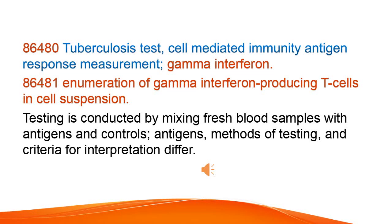Tuberculosis test, cell-mediated immunity antigen response measurement, gamma interferon. Enumeration of gamma interferon producing T-cells in cell suspension. Testing is conducted by mixing fresh blood samples with antigens and controls. Antigens, methods of testing, and criteria for interpretation differ.